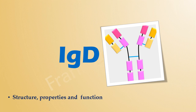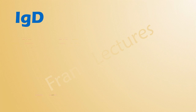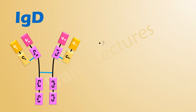Let's now talk about immunoglobulin D. Structurally, IgD is a monomer. It has two delta heavy chains and two light chains. Each heavy chain has three constant domains.